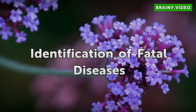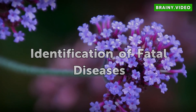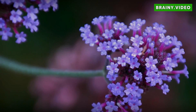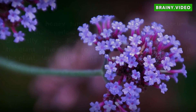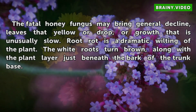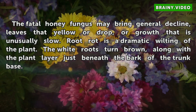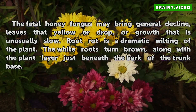Identification of fatal diseases. The fatal honey fungus may bring general decline, leaves that yellow or drop, or growth that is unusually slow. Root rot is a dramatic wilting of the plant. The white roots turn brown, along with the plant layer just beneath the bark of the trunk base.